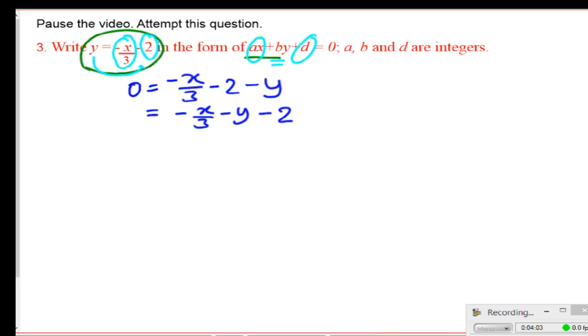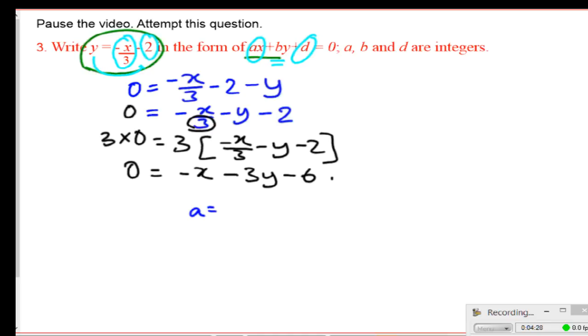Now, to get rid of the denominator, I need to multiply everything by 3. So, 0 = 3 times (-x/3) - y - 2. So that becomes 0 = -x - 3y - 6. So here, you can see that a = -1, b = -3, and d = -6. That's one way.